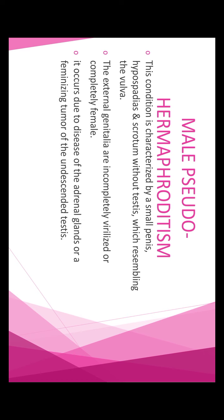Male pseudo hermaphroditism occurs in males. Signs and symptoms include: the penis is small, hypospadias is present — which is a congenital abnormality where the normal urethral opening is on the ventral aspect (under surface) of the penis. The scrotum is without testes and resembles a vulva. The external genitalia are incompletely virilized or completely female in appearance. It occurs because of disease of the adrenal glands or a feminizing tumor of the undescended testes.